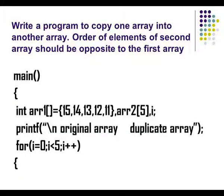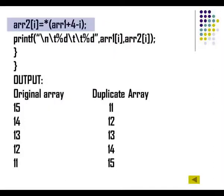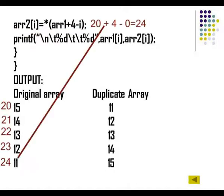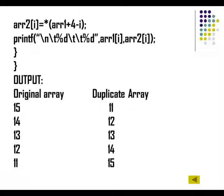The scope of the for loop is controlled by this opening brace. The most important step copies the elements of the array. During the first iteration, the value of i is 0. The first element of the second array is given by array1 plus 4 minus i. Array1 is the address of the first element of the first array; adding 4 moves to the last element of the array. So in the first element of the duplicate array, I am copying the last element of the first array — this is exactly what I wanted.